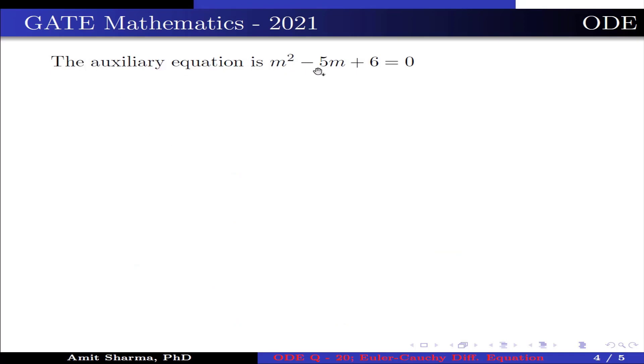The auxiliary equation is m² - 5m + 6 = 0, this implies m = 2, 3. Therefore, y = c₁e^(2z) + c₂e^(3z). This implies y = c₁x² + c₂x³, because x = e^z.